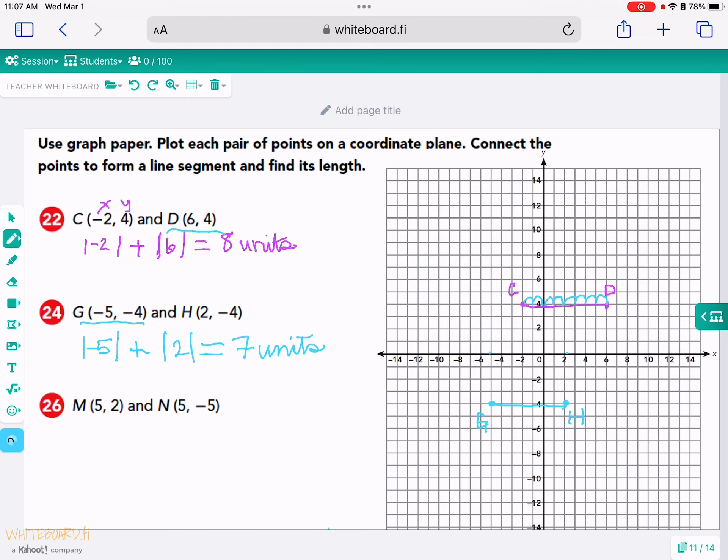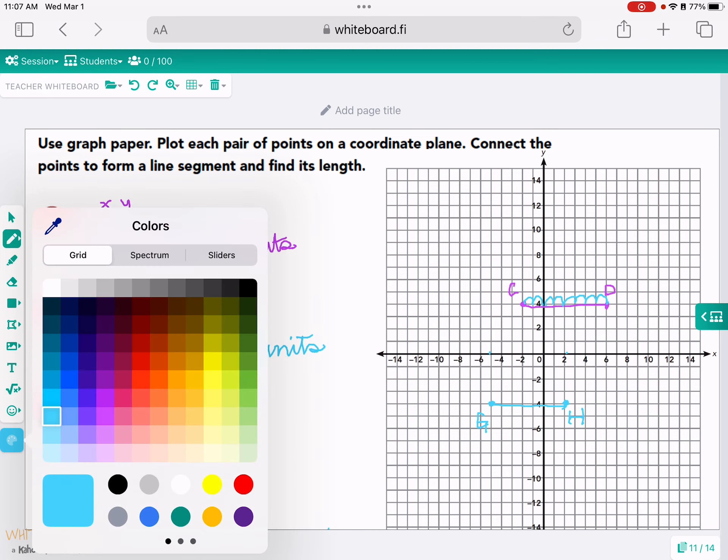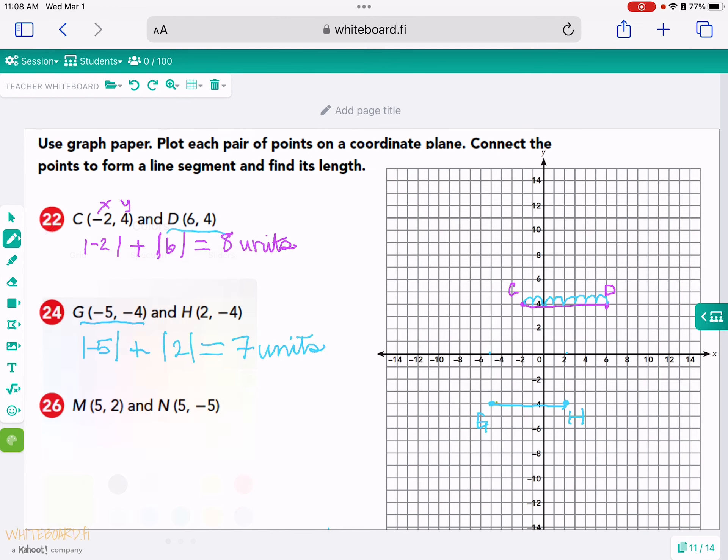7 units. And you see, let me go ahead and change again, and I'll show you the hops. I'll change this to green. And you can see the hops over here. 1, 2, 3, 4, 5 gets me to the y-axis, and 2 more get me over to H. So that's 7 units in all.